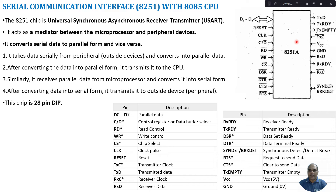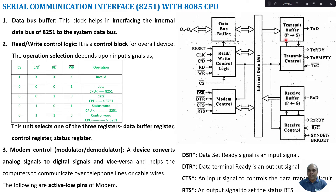Now let us look at the architecture of the 8251 IC. It consists of 7 blocks. It has a transmit buffer, which converts parallel data to serial data and transmits it through the TXD line. The parallel data comes from the microprocessor via the data bus buffer — from D0 to D7 — and goes into the transmit buffer where it is converted from parallel to serial and transmitted. The transmission is controlled by the transmit control block, which generates Transmit Ready and Transmitter Empty status signals, and the transmitter clock determines the speed of transmission.